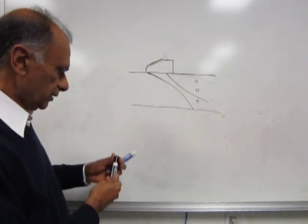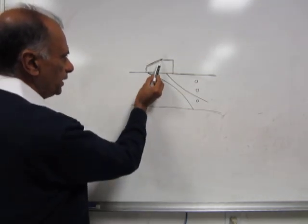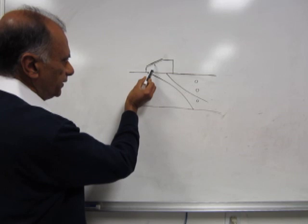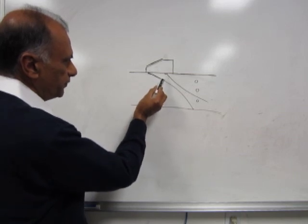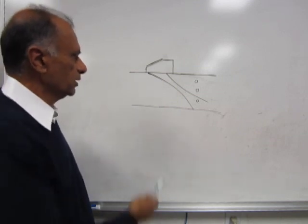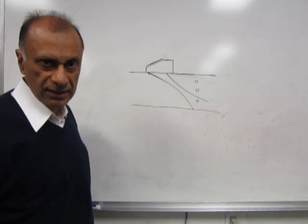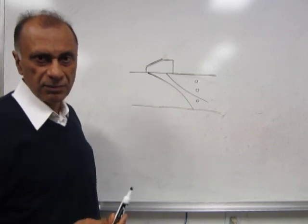On the angle beam probe we basically have a piezoelectric crystal here that transmits L waves. They are refracted into shear waves and it produces a shear wave beam, for example at a refracted angle of say 60 degrees, and the beam has a beam spread.